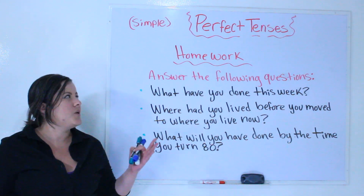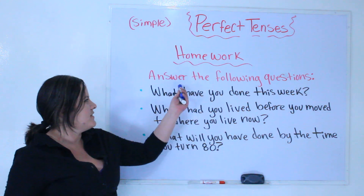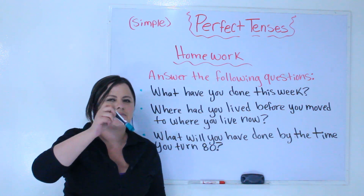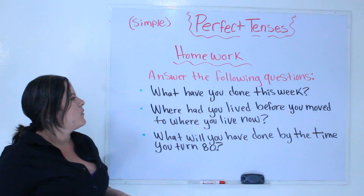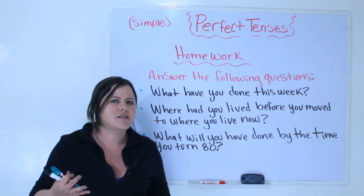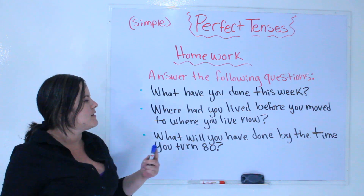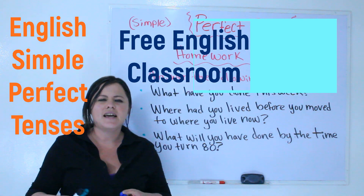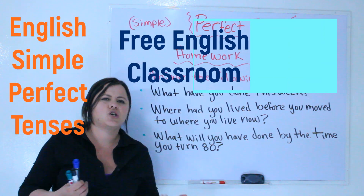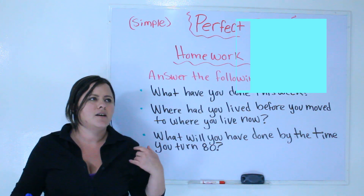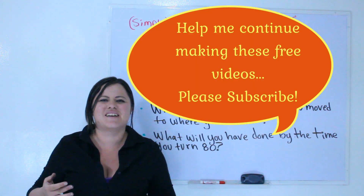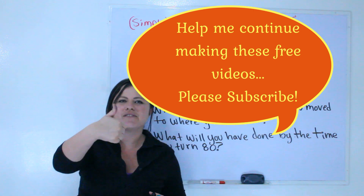Here is your homework. Please answer the following questions using full sentences in the comment section below. Question 1: What have you done this week? For example: 'I have worked very hard to create these videos.' Question 2: Where had you lived before you moved to where you live now? For example: 'I had lived in Colorado before I moved to LA.' Question 3: What will you have done by the time you turn 80? For example: 'By the time I turn 80, I will have made five million videos.' Please subscribe, leave your homework below, and thanks for watching!